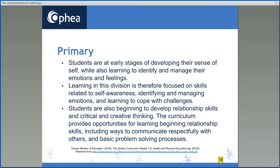Although the social emotional learning skill expectations remain the same throughout all grades, the approaches and strategies used to help students build these skills vary with the developmental level of the students. In the primary division, students are at early stages of developing their sense of self, while also learning to identify and manage their emotions and feelings. Learning in this division is therefore focused on skills related to self-awareness, identifying and managing emotions, and learning to cope with challenges. Primary students are also beginning to develop relationship skills and critical and creative thinking, including ways to communicate respectfully with others and basic problem-solving processes.